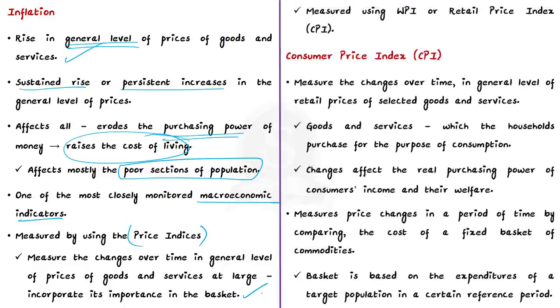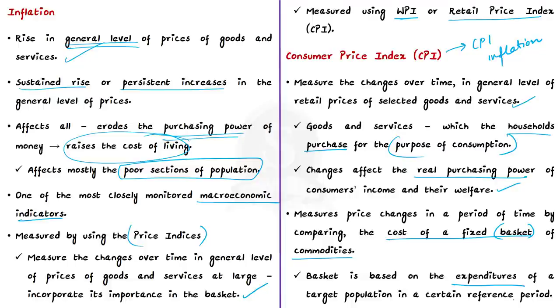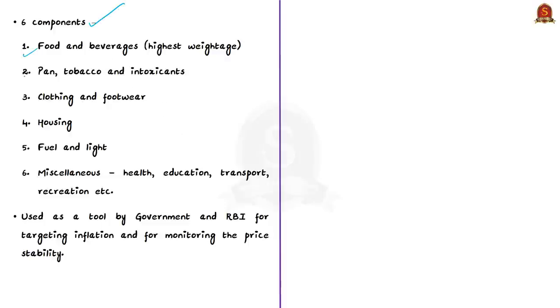Inflation is one of the most closely monitored macroeconomic indicators. It is measured using price indices as they measure the changes over time in general level of prices. The rate of inflation can be measured using the price indices such as either the wholesale price index or retail price index, which is generally the consumer price index. CPI is used to measure the changes over time in general level of retail prices of selected goods and services. These goods and services are those which households purchase for consumption. CPI measures the price changes by comparing the cost of a fixed basket of commodities. CPI has six components: food and beverages, pan tobacco and intoxicants, clothing and footwear, housing, fuel and light, and lastly miscellaneous which includes health, education, transport, recreation, etc. Out of all, food and beverage have the highest weightage.